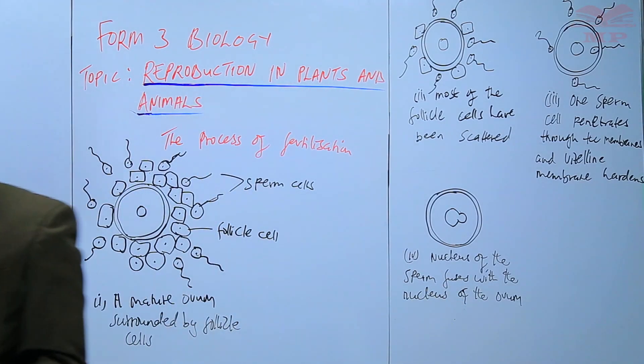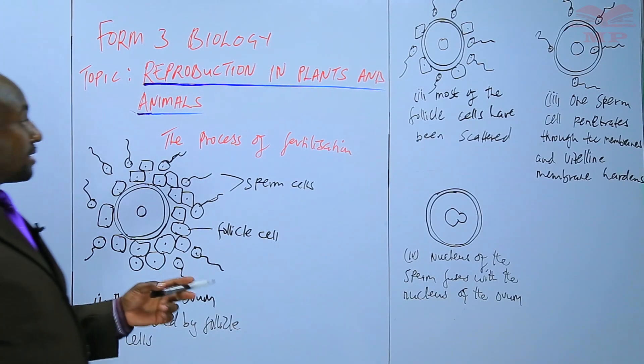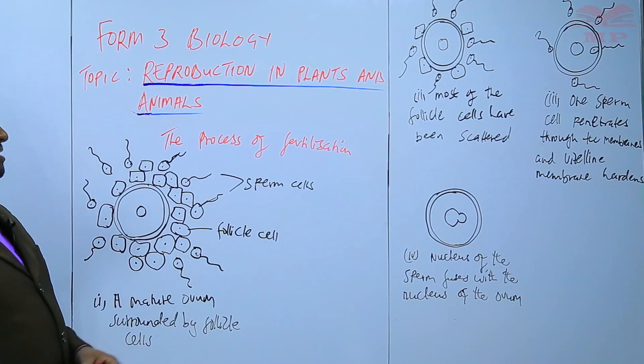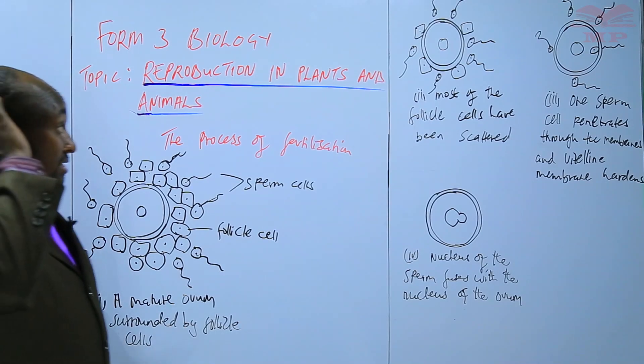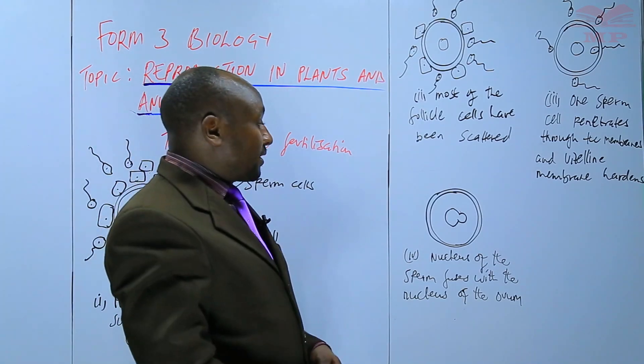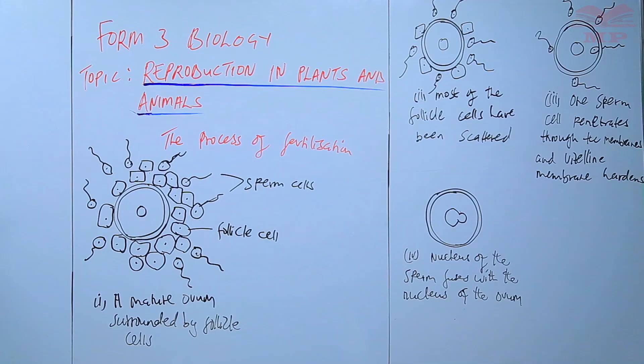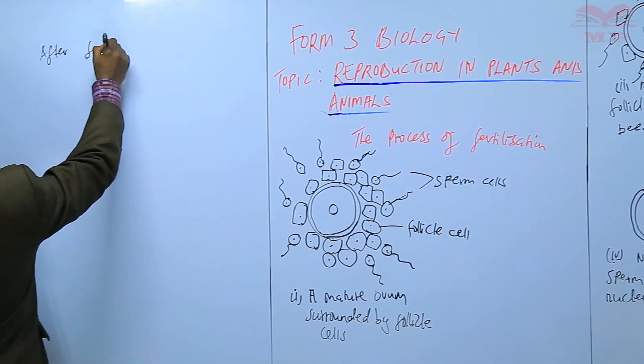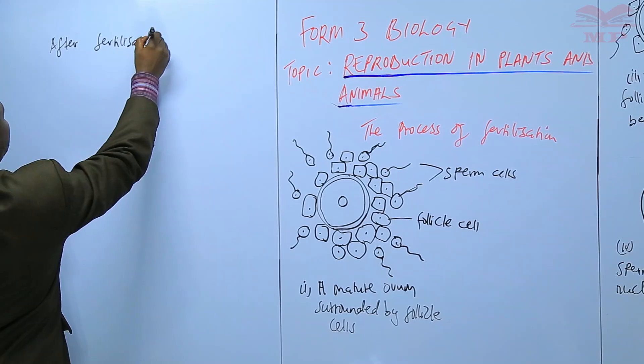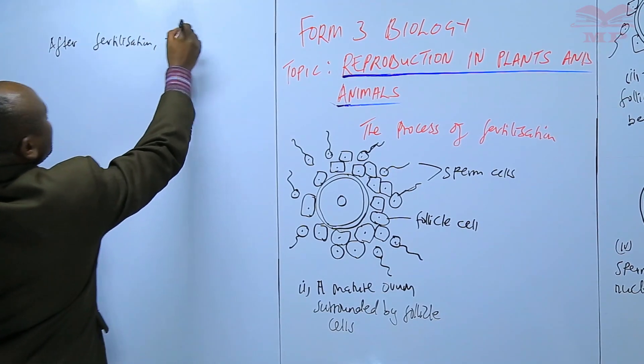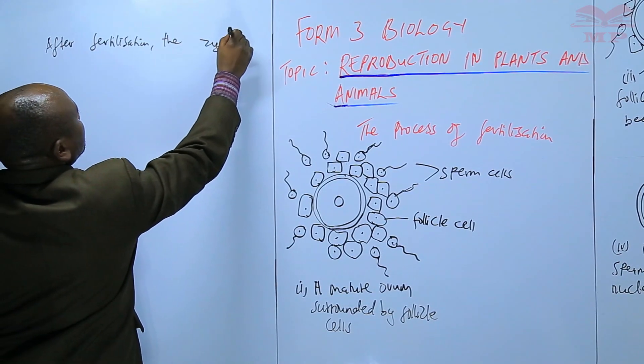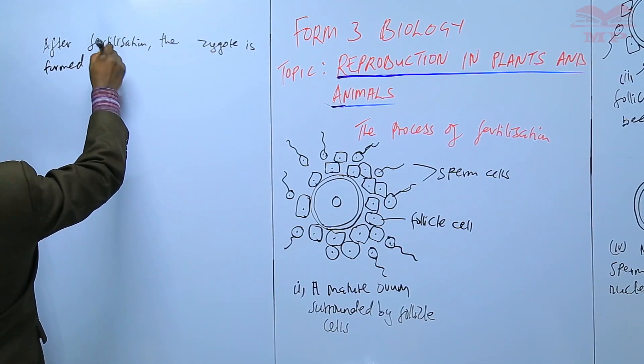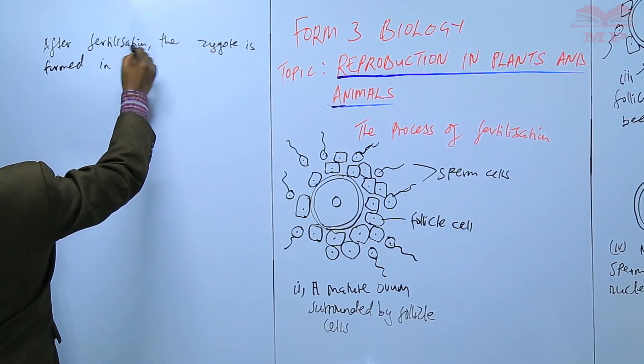What follows after the fertilization, we form the zygote, and that zygote is formed within the oviduct. After fertilization, the zygote is formed in the oviduct.